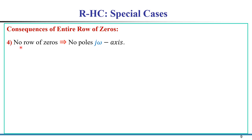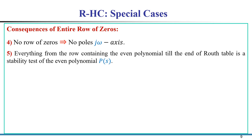One more point: if there is no row of zeros, this means no poles on the jω axis. Conversely, if there are poles on the jω axis, there must be one row of the Routh-Hurwitz table that becomes zero. Everything from the row containing the even polynomial to the end of the table is a stability test for P(s).